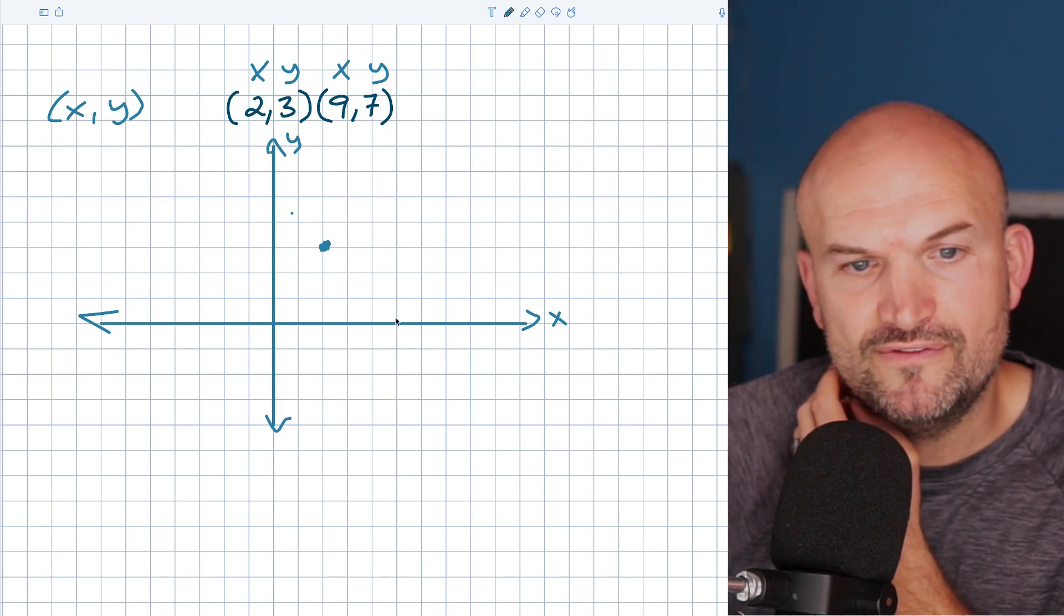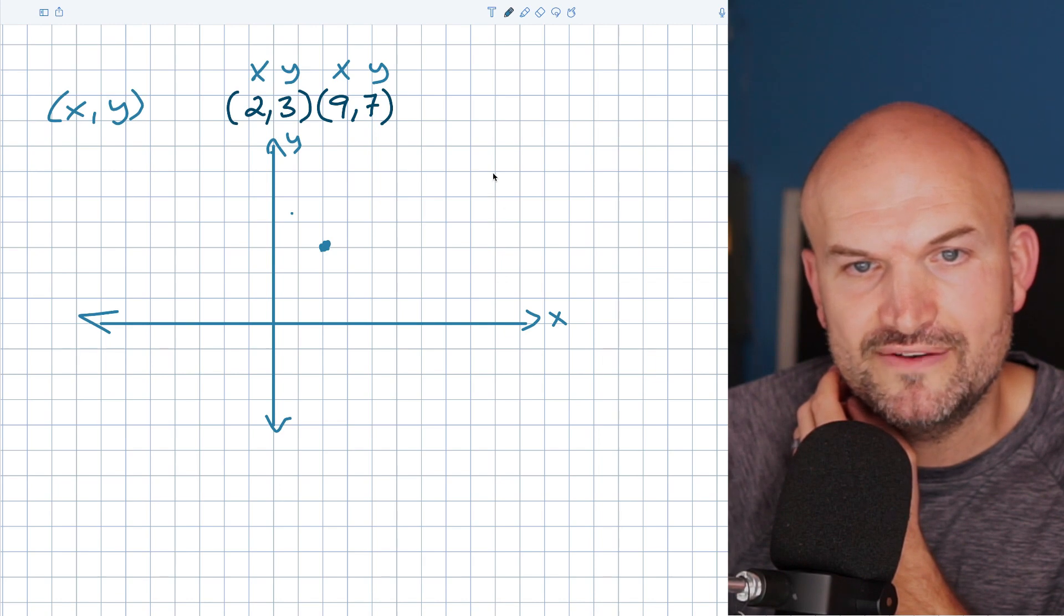And if I was going to plot this point as an X, Y, I would go over nine, up seven. So over nine - one, two, three, four, five, six, seven, eight, nine - up seven - one, two, three, four, five, six, seven.